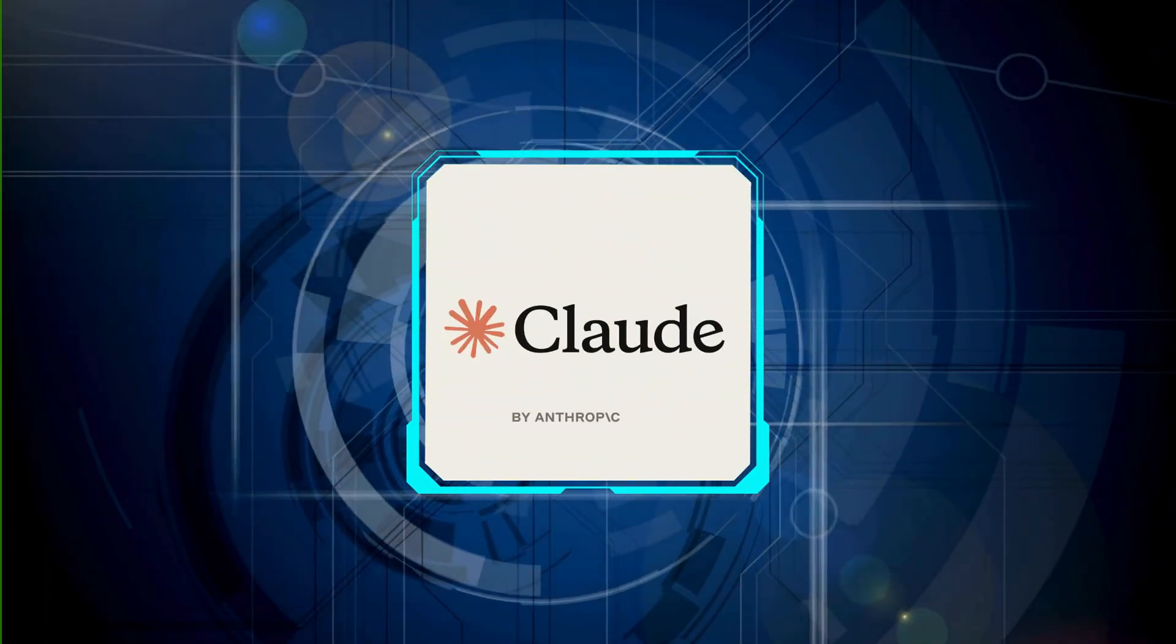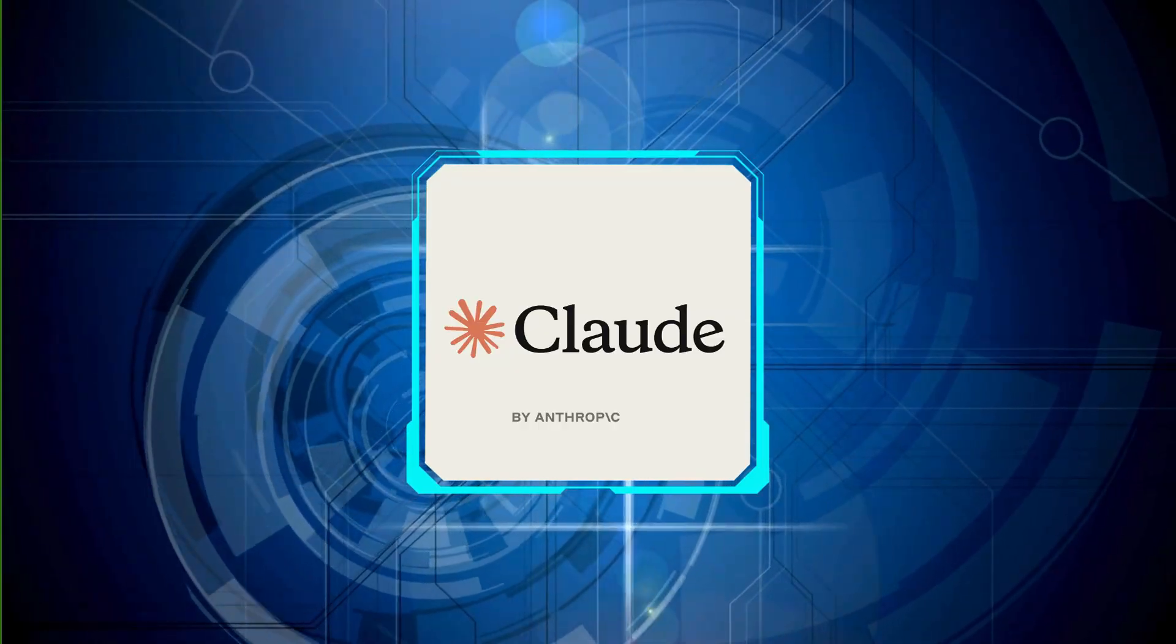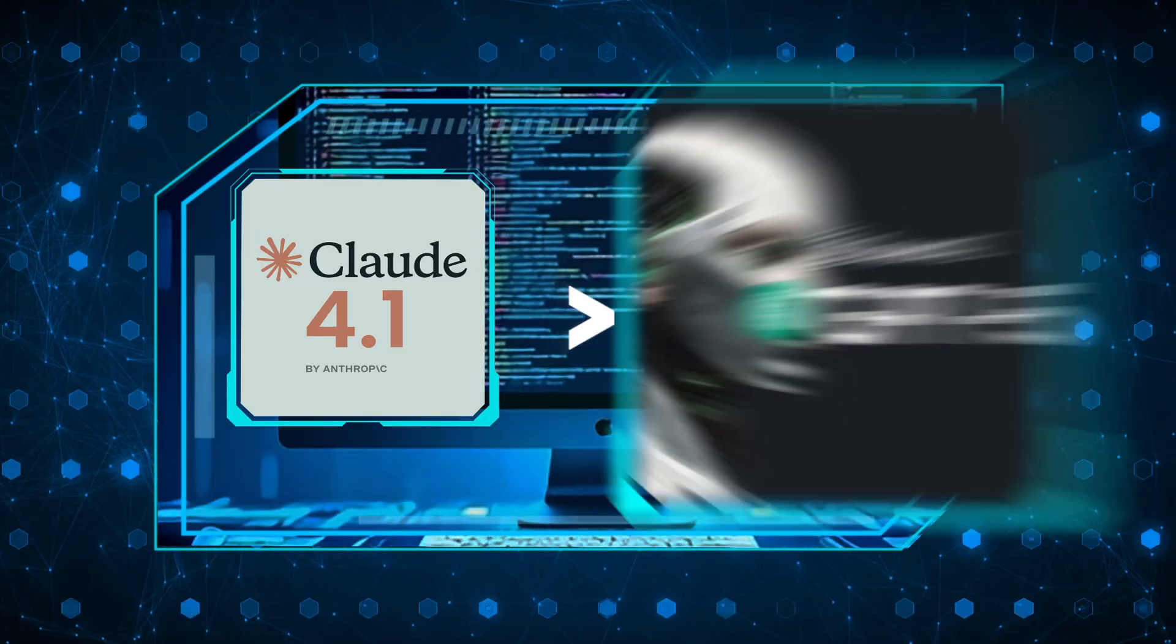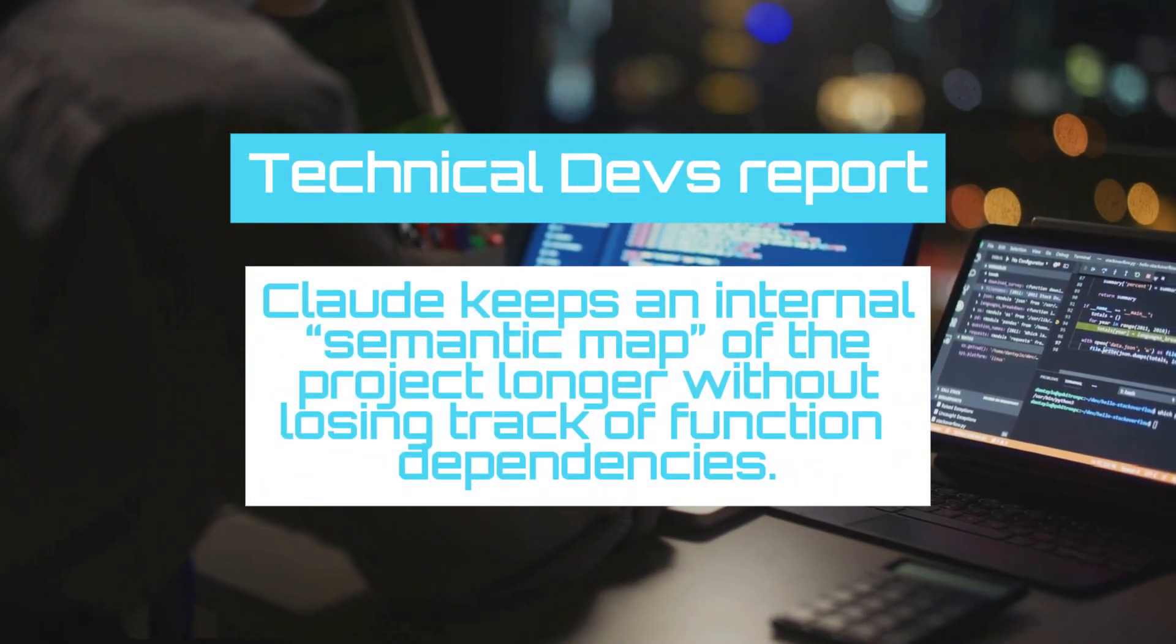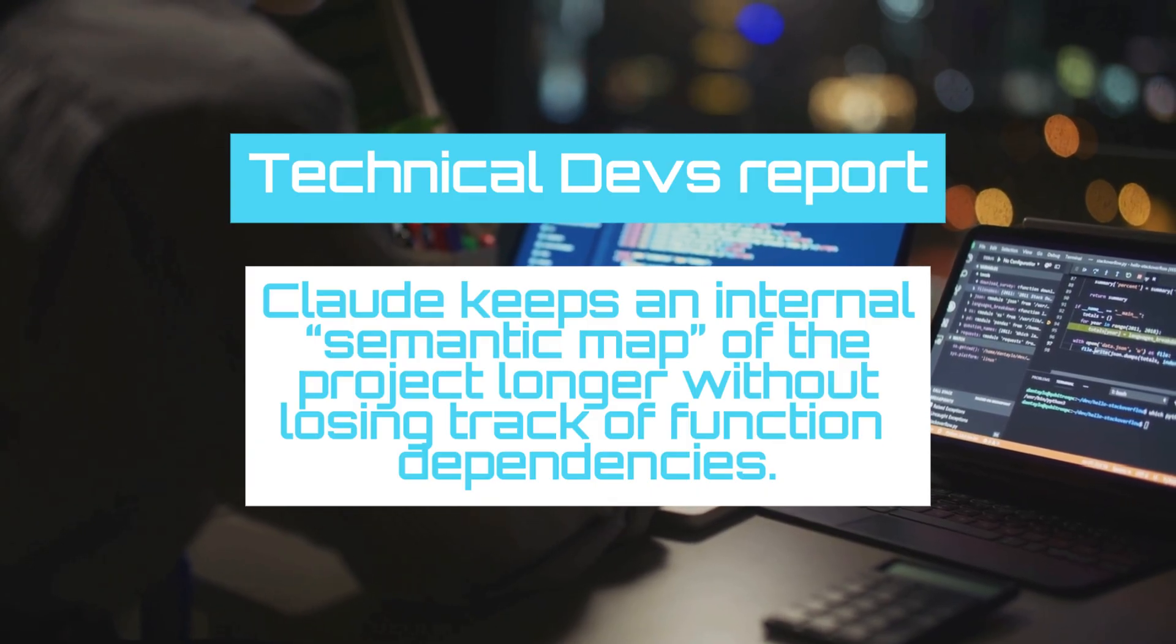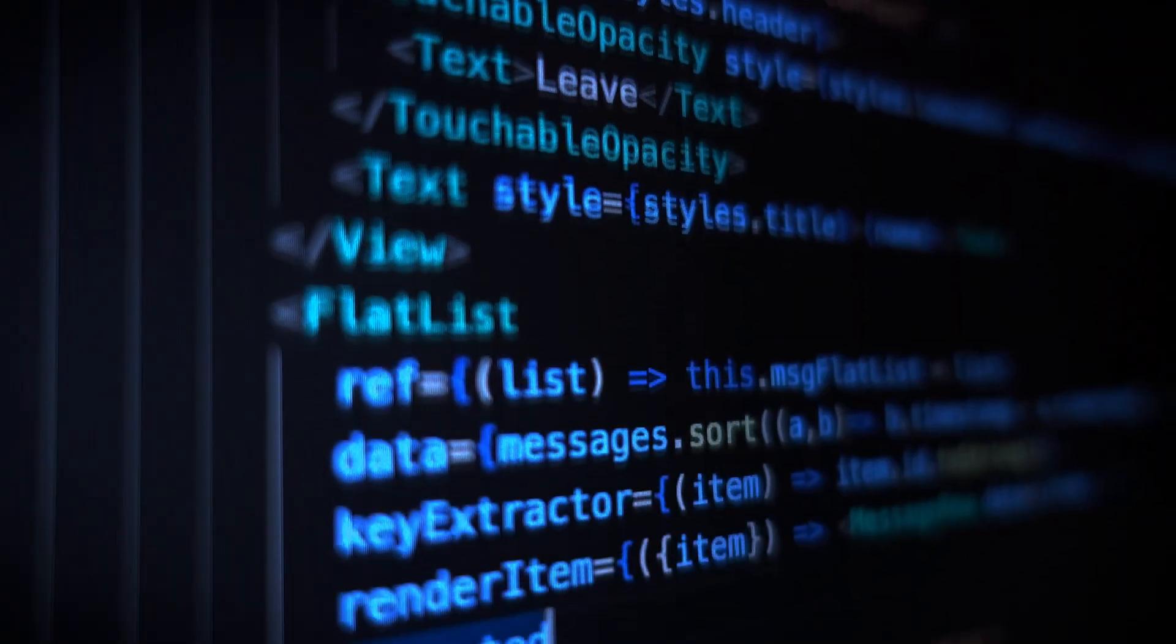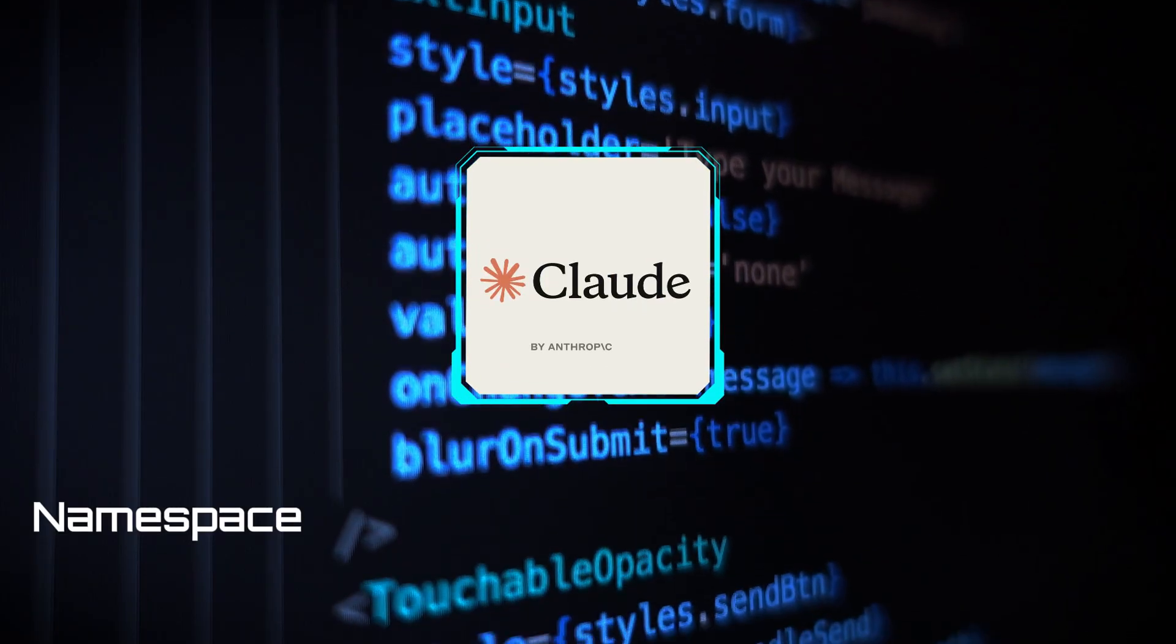Claude's architecture, while extremely strong, still runs a more modular design for reasoning versus coding. And here's where it shows. On sustained multi-file code generation, Claude Opus 4.1 still edges out GPT-5. Technical devs report Claude keeps an internal semantic map of the project longer without losing track of function dependencies. GPT-5 narrows this gap by leveraging cross-block state normalization and a 1M token context window. But in practical dev work over 30-plus files, Opus maintains better namespace discipline and comment coherence.